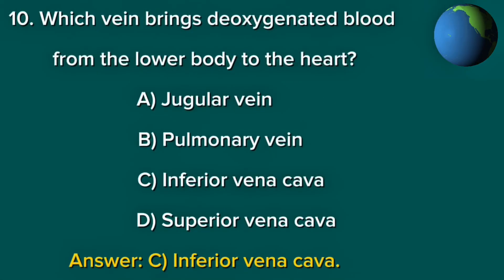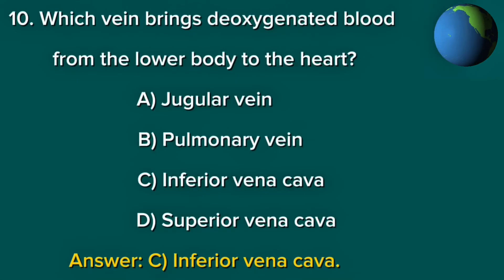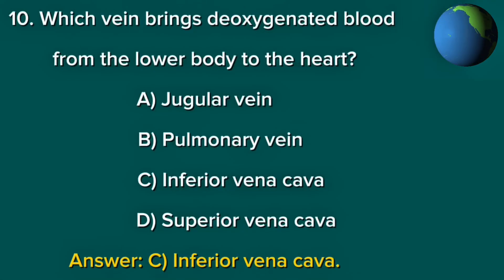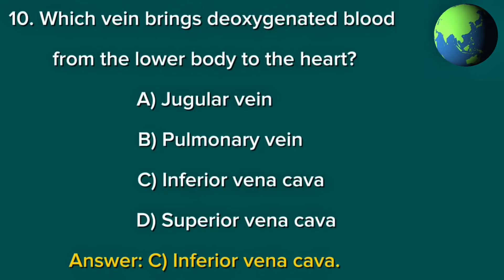Question 10. Which vein brings deoxygenated blood from the lower body to the heart? A. Jugular vein. B. Pulmonary vein. C. Inferior vena cava. D. Superior vena cava. Answer: C. Inferior vena cava.